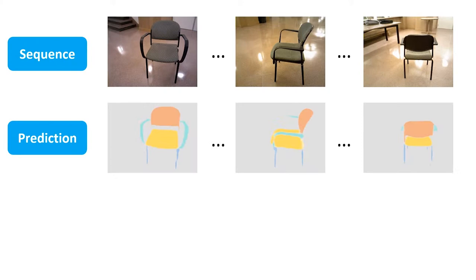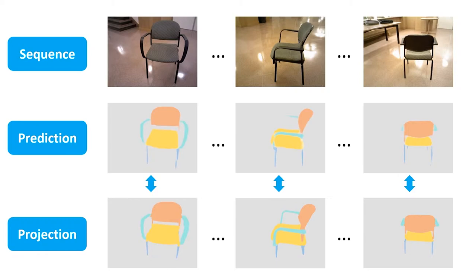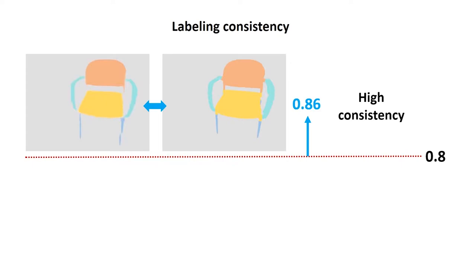More specifically, for each sequence, we compare the labeling predicted for the frame by the network to the labeling obtained by projecting the labels fused and refined on the reconstructed model. For each pair of labeling on the same frame, we check the percentage of pixels with consistent label.